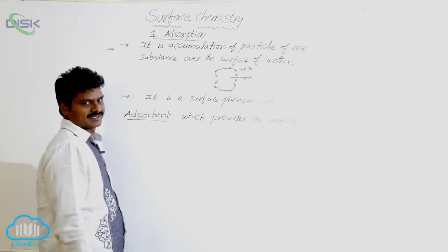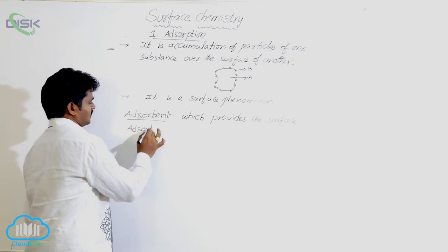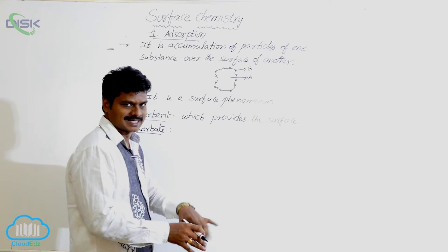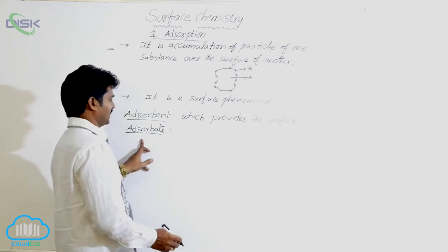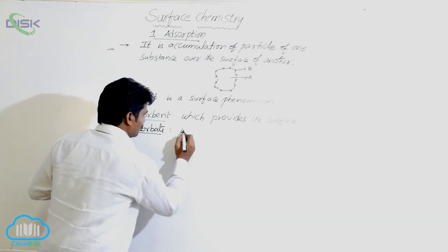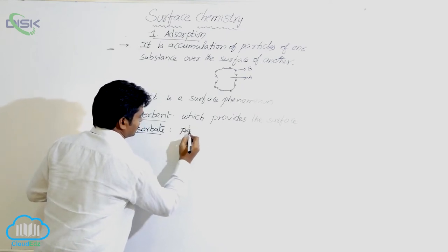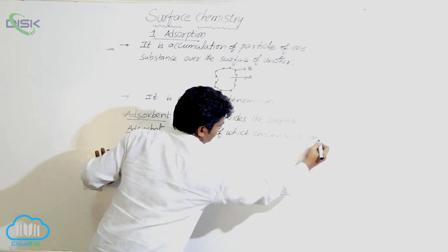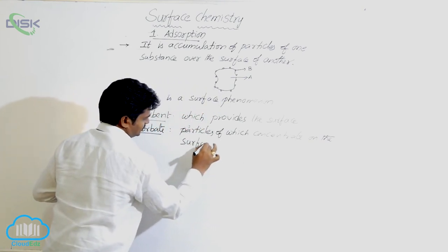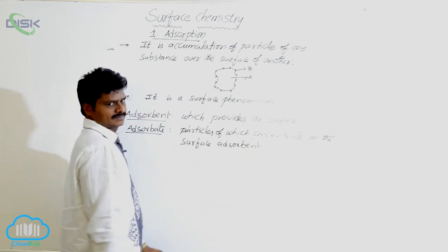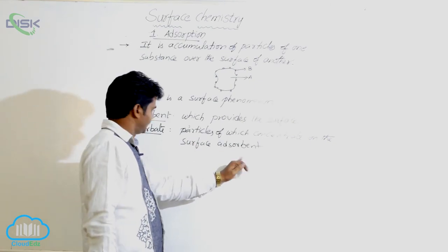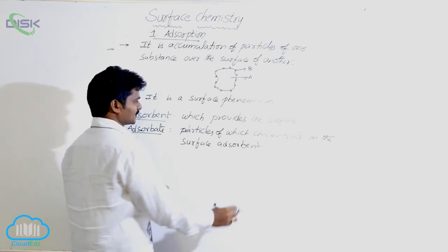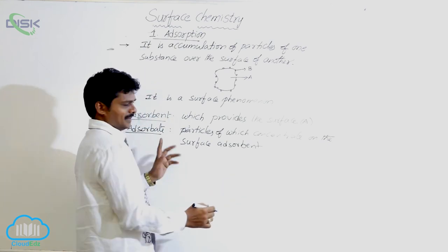The substance whose molecules concentrate on the surface of the adsorbent is called the adsorbate. In this picture, particles of B are concentrating on the surface of A. So here, adsorbent is A and adsorbate is B.